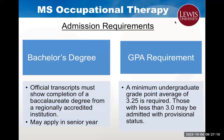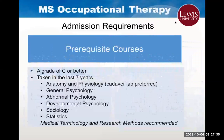Students must have a bachelor's degree from an accredited institution with the GPA requirements listed on the slide. The process to apply can begin in your final year of your undergraduate courses. The MSOT program requires the listed prerequisite courses with a C or higher and completed within the last seven years for consideration into the program.